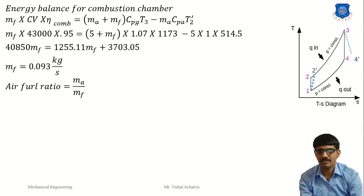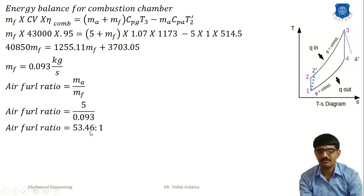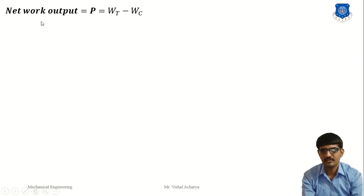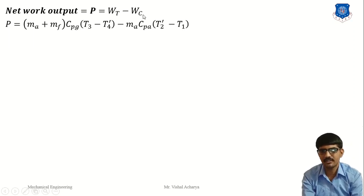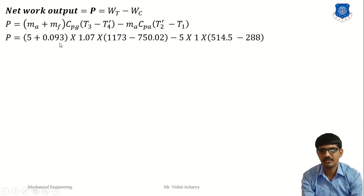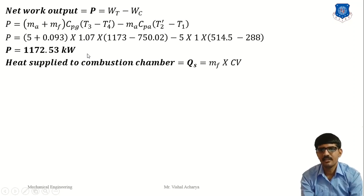The air-fuel ratio is ma / mf = 5 / 0.093 = 53.76. Next, the net power output: P = W_turbine - W_compressor = (ma + mf) × Cp_gas × (T3 - T4_dash) - ma × Cp_air × (T2_dash - T1). Substituting: (5 + 0.093) × 1.07 × (1173 - 750.02) - 5 × 1 × (514.5 - 288). Therefore, net power output = 1172.53 kW.